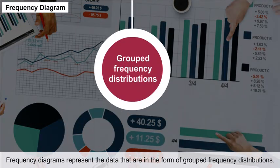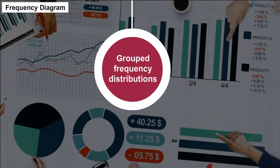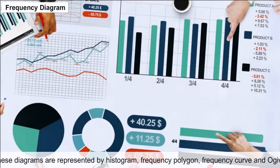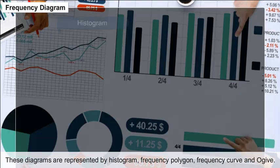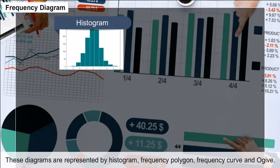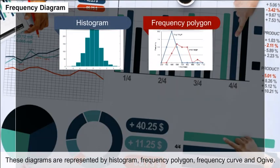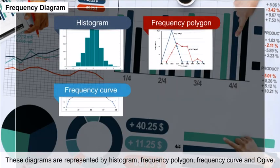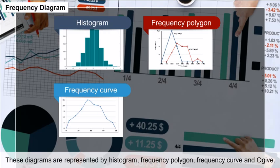Frequency Diagrams: Frequency diagrams represent data that are in the form of grouped frequency distributions. These diagrams are represented by histogram, frequency polygon, and frequency curve.